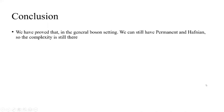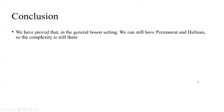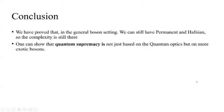Let's talk about our conclusion. We have proved that in a generalized boson setting, we can still have permanents and Hafnians, so complexity is still there. One can show that quantum supremacy is not just based on quantum optics, but also more exotic bosons. We also propose experiments using spin and circuit QED.